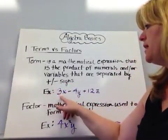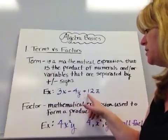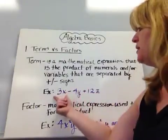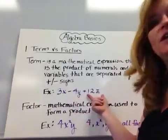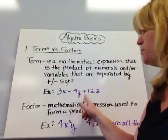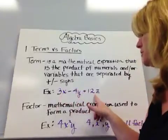For an example, 3x minus 4y plus 12z. 3x is a term, negative 4y is a term, and 12z is a term. Notice they're separated by plus and minuses, so this is a term, term, term.